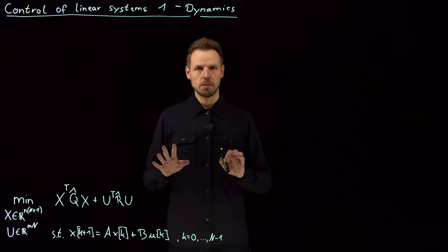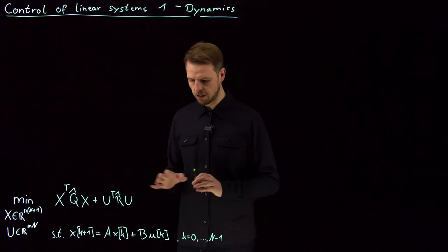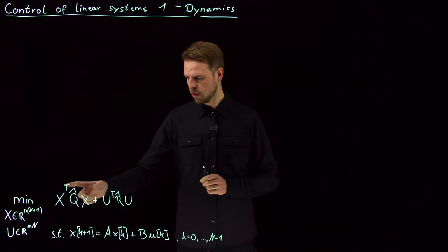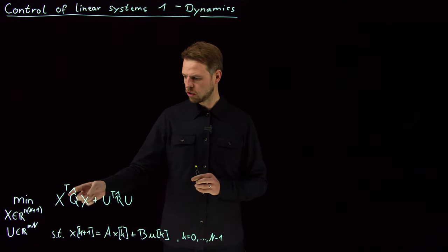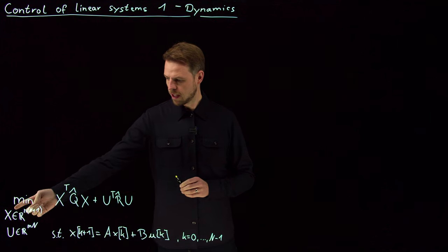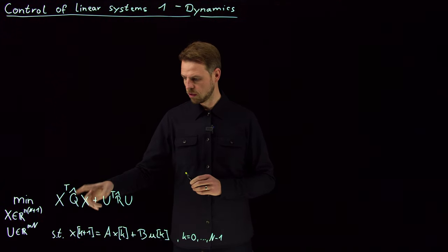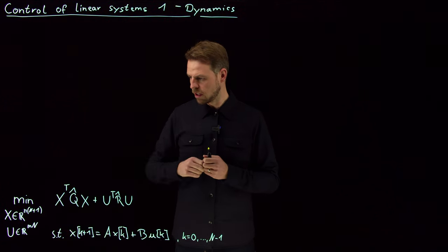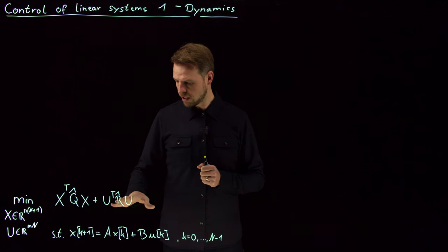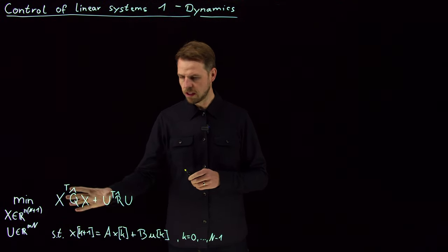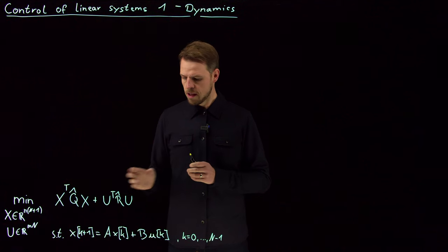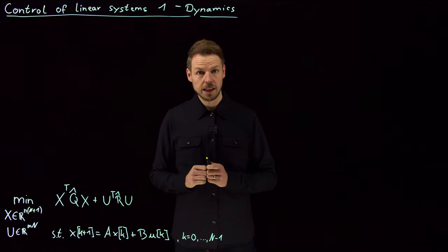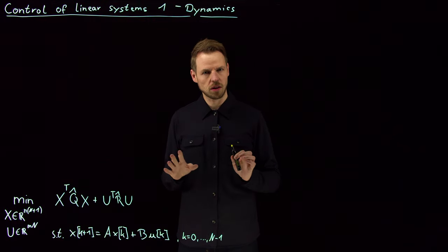What this and the next two videos are going to be about is the special case where the constraint is a linear dynamical system. We finished with the reformulation of the loss function in terms of the large state and control vectors. The Q-hat matrix was the Q matrix stacked on the diagonal as a block diagonal matrix, and similarly for the R-hat matrix, making this a very nice quadratic form. In the special case of a linear dynamical system, we can actually get rid of the constraint.